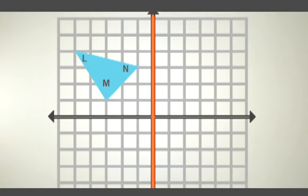Count how many units each point is away from the reflection line. The image would be the same number of units on the other side of the reflection line. Let's start with point N. Point N is one unit away from the reflection line, so the image of N is one unit from the other side of the reflection line.